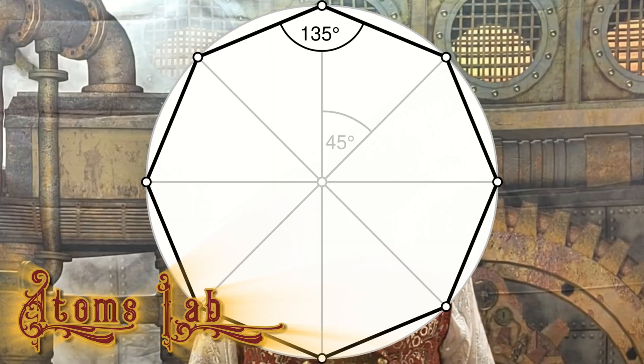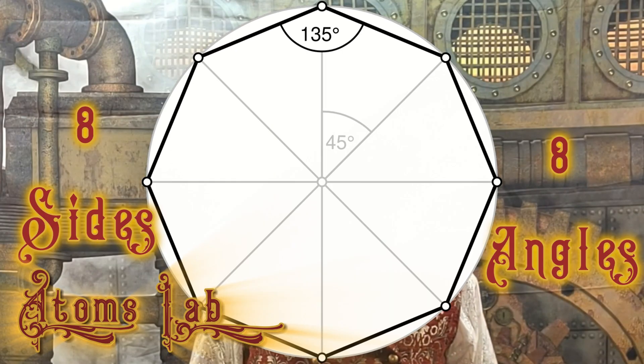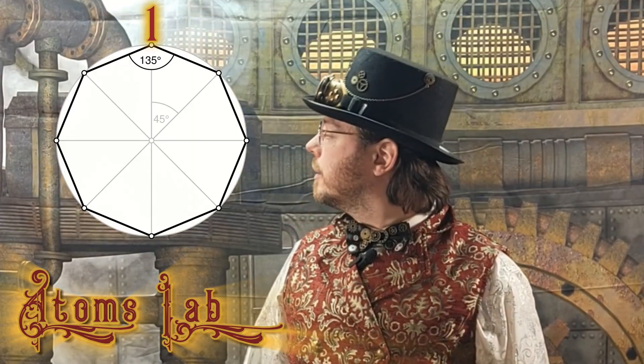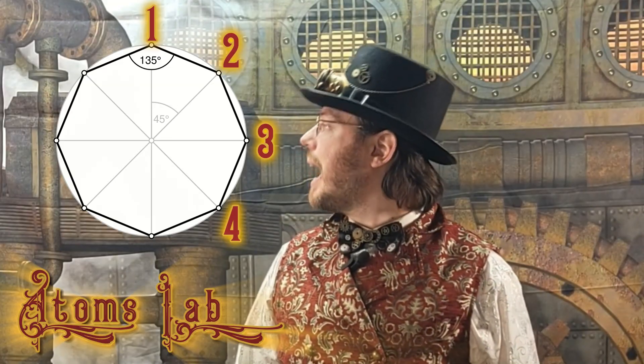An octagon has eight sides and eight angles. Let's count them: one, two, three, four, five, six, seven, eight — eight sides. One, two, three, four, five, six, seven, eight — eight angles.